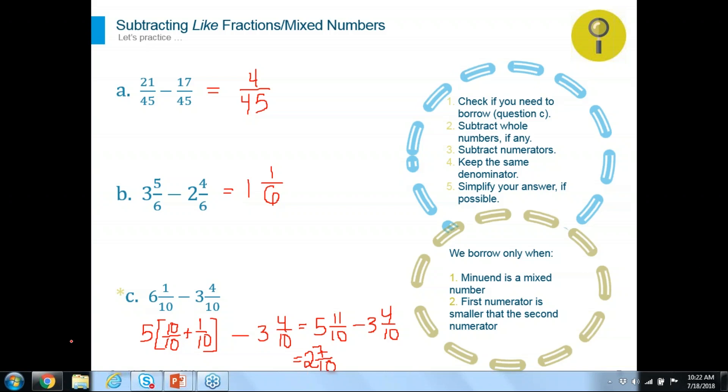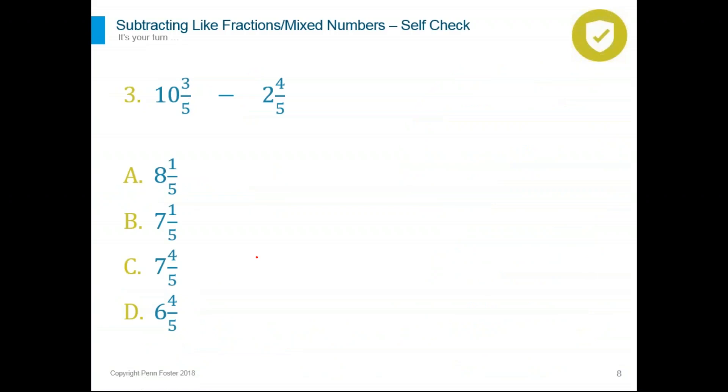Okay, let's move on to a self-check question. 10 and 3 over 5 minus 2 and 4 over 5. Look at the numerators. Do you see a problem? Do we have to borrow? Or is it just a simple subtraction problem? What do you think? Again, write down the problem on a piece of paper. When you rewrite the problem, that's what I find. I understand more about the problem. When I write the problem, I realize I have common denominators. When I write the problem, I realize I have the first numerator smaller than the second numerator, so that would make me think about doing what? Should I borrow or no?